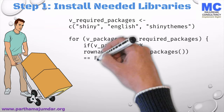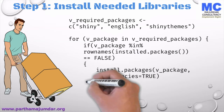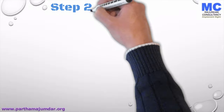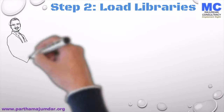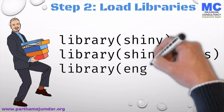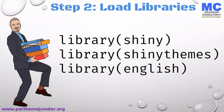The first step is we have to install the needed libraries required for the application. For a Shiny app, we definitely require the library Shiny. I have also chosen to use the library Shiny Themes which provides a better UI for our application, and I have chosen to use a library called English for converting numbers to words. Once the libraries are installed, the second step is to load the libraries. We can load the libraries by using the library function. In this example, we load the Shiny, Shiny Themes, and English libraries.